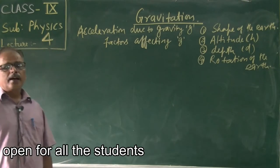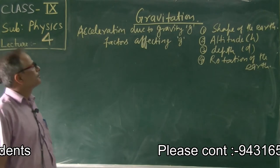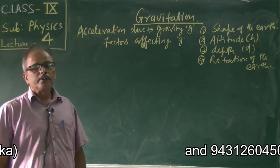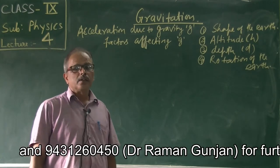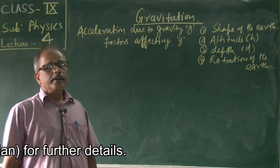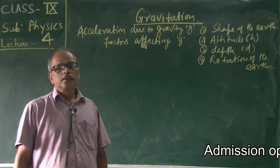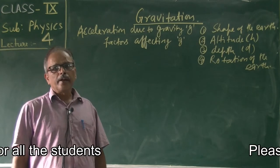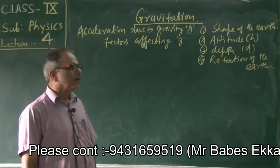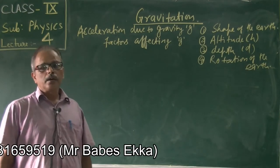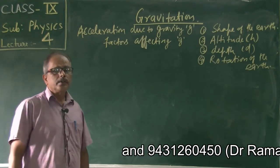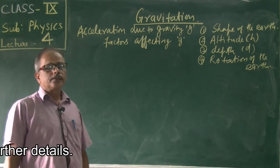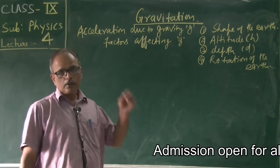In our last classes we have already discussed Newton's universal gravitational law and we got the formula: F equal to G m1 into m2 by r square. This is the force of attraction due to gravitation between two given objects.